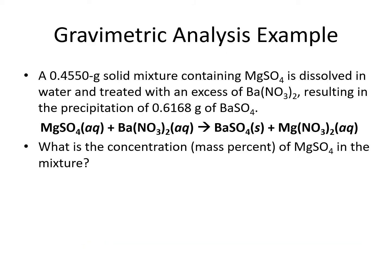Here's an example of gravimetric analysis. We have a mixture that contains magnesium sulfate and some other stuff. It's dissolved in water and treated with an excess of barium nitrate. Barium nitrate is going to react with the magnesium sulfate and it results in the precipitation of 6.168 grams of barium sulfate. That's how much product we get out of this reaction.